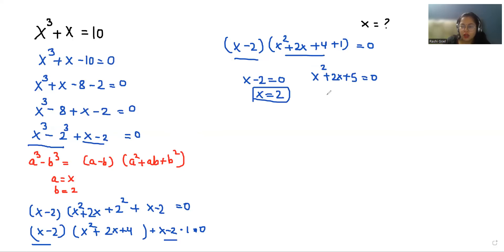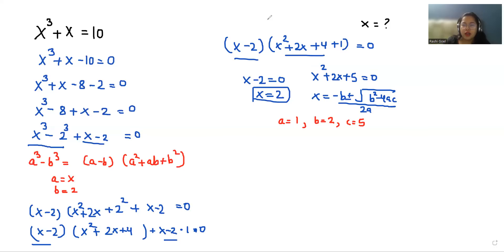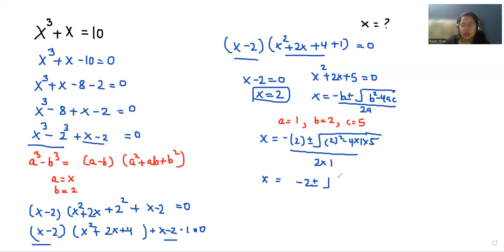The second equation x squared plus 2x plus 5 equals 0 looks like a quadratic equation, so we use the quadratic formula: x equals negative b plus or minus square root of b squared minus 4ac, all over 2a. Here a is 1, b is 2, and c is 5. So x equals negative 2 plus or minus square root of 4 minus 20, all over 2.